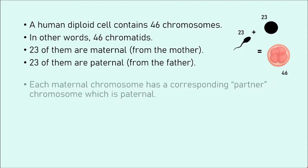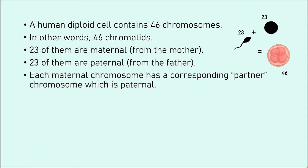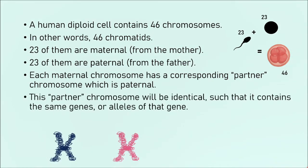Each maternal chromosome has a corresponding partner chromosome which is paternal. So we have 23 maternal chromosomes, and each of them will have their own partner from the father. Two corresponding chromosomes associate together and will be identical in relation to their genes — alleles might be different, but the genes are the same. Remember that an allele is just a different version of a gene. The gene that codes for your height, for example, will be found only on one chromosome and in a very specific place on that chromosome.